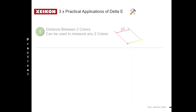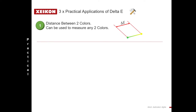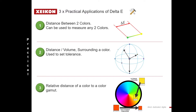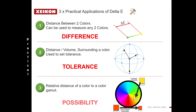Let's move on to the three practical applications of Delta E. We have: difference between two colours; we can use it to describe a surrounding area around a colour, which we use for setting a tolerance; and we can use this measurement to see the relative distance of a colour compared to a gamut. So we have difference, tolerance, and possibility.